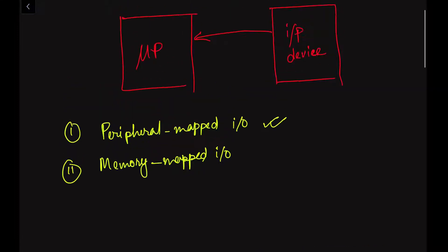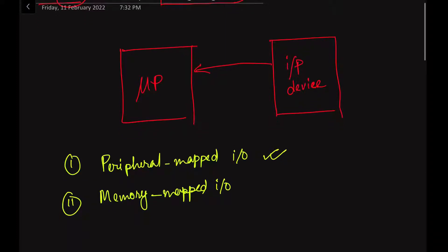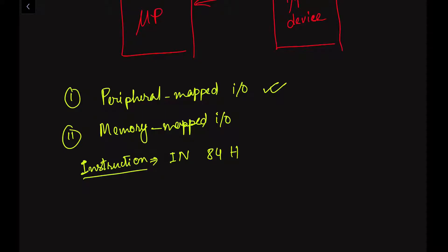In this video we will learn about peripheral-mapped input-output interfacing. The purpose of this video is to draw the timing diagram. In the timing diagram, the most important part is the timing of signal transitions, which we represent in terms of T-states. Let us consider one example. Suppose we have the instruction IN. The opcode or machine code for IN will be DBH in hex code. This DB is the machine code for the IN instruction.